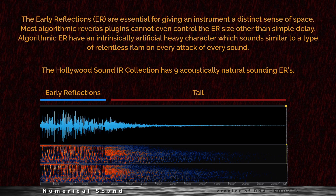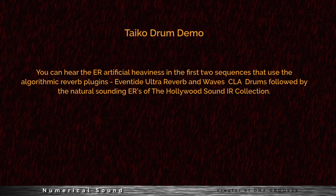The Hollywood IR Collection has 9 acoustically natural sounding early reflections. In a Tyco drum demo, you can hear the early reflection artificial heaviness in the first two sequences that use algorithmic reverb plug-ins — Eventide Ultra Reverb and Waves CLA Drums — followed by the natural sounding early reflections of the Hollywood Sound IR Collection.